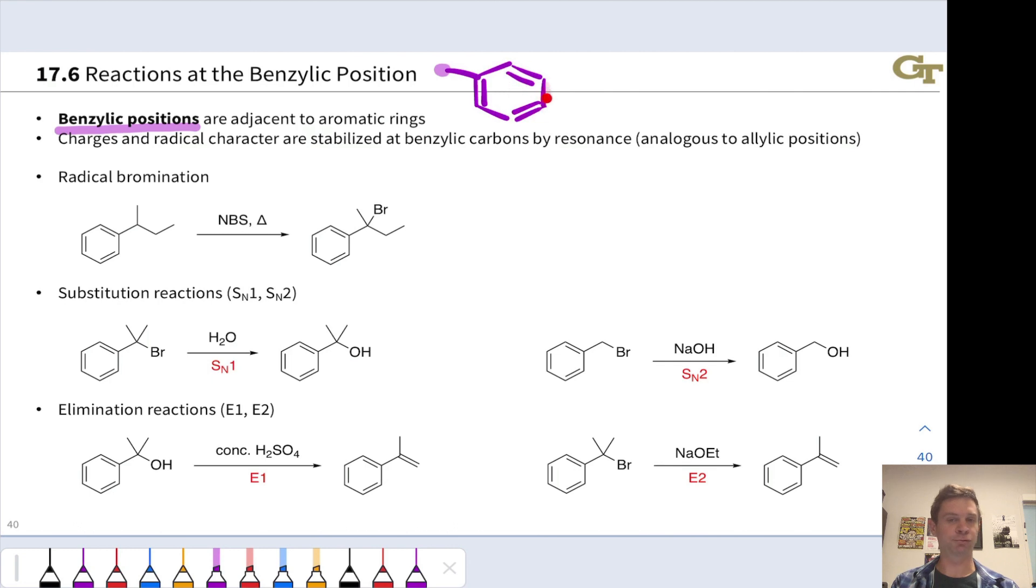If we didn't have the right half of the benzene ring, we'd be looking at an allylic carbon, so there's a deep analogy here between allylic and benzylic systems.